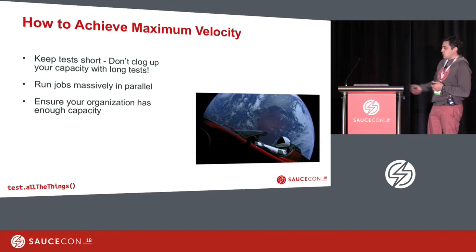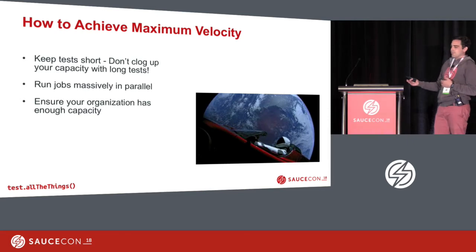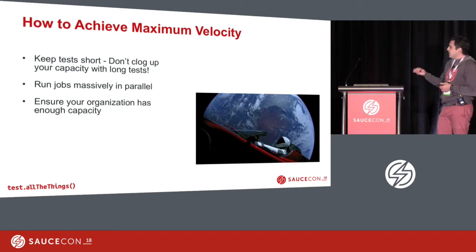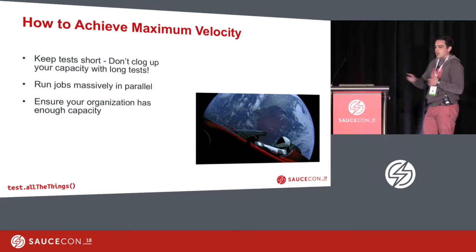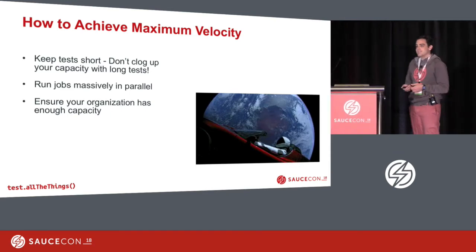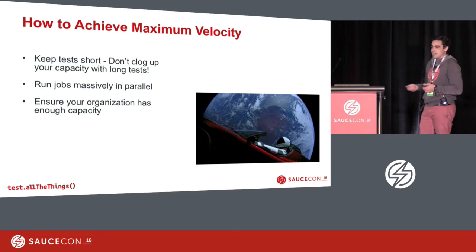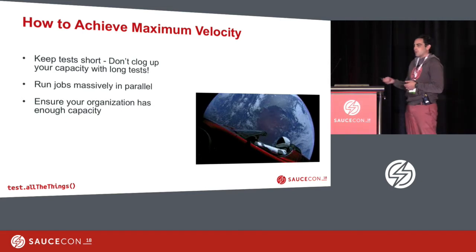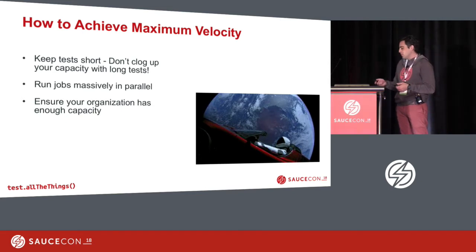Make sure you're running your jobs massively in parallel — that's your lever on speed with your build process. And ensure that your organization has enough capacity. With a lot of teams using Sauce Labs at once, one team might swamp the server and use up all that capacity, affecting other teams that have modest requirements for parallelization or a smaller build.